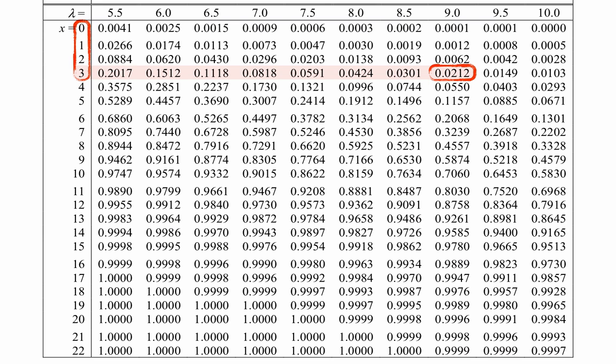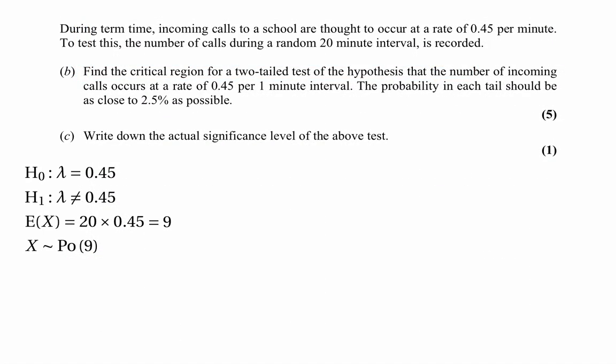We also scan up the column to find the probability as close as possible to 0.975. We get 0.9780, which tells us the probability of getting 15 or less is 0.9780. Subtracting from 1 gives the probability of getting 16 or more, which is as close as we can get to 0.025. So the other part of the critical region is 16, 17, and higher. The full critical region is: numbers that are 3 or less combined with numbers that are 16 or more.